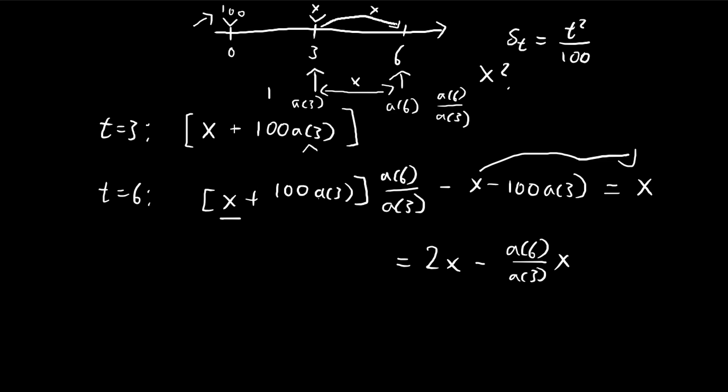And also on the left, you can see that these a3s, they cancel out. So we have 100a6 minus 100a3. And so with a bit of rearranging, we see that X is equal to 100(a6 minus a3) divided by 2 minus a6 divided by a3. Now all we have to do is find the accumulation function at, and we can substitute our numbers in to find what X is.